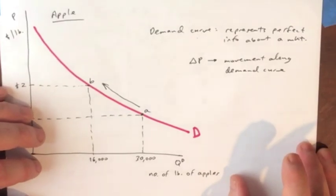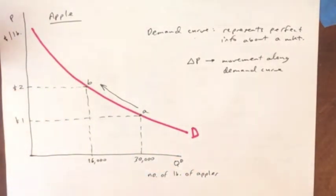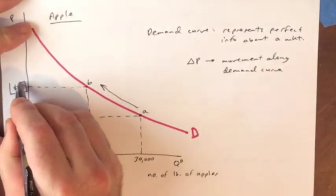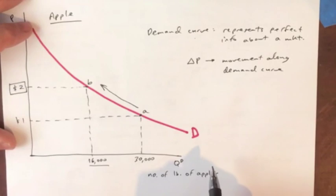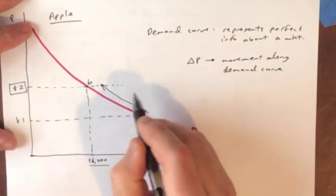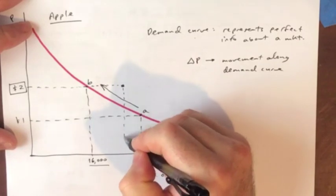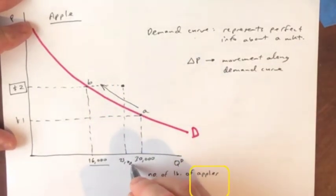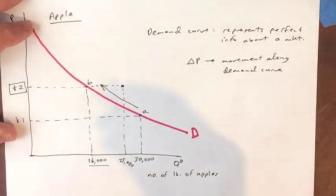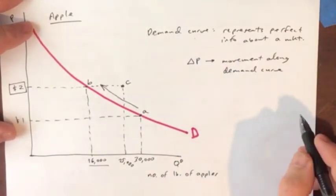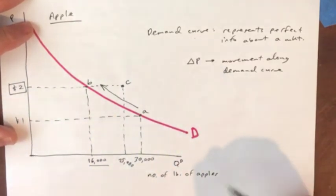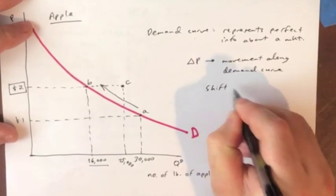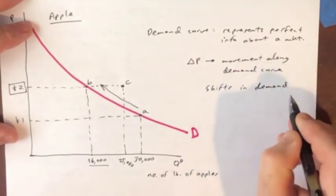Now we have another thing that can happen, which is that we can have something else change, not the price. Let's say that the price remains constant at two dollars. And we know that before, people were buying sixteen thousand. But let's say now something else is happening, that at a price of two dollars, we have a new outcome where people are now buying more than they were before. Let's say that they're buying now twenty-five thousand at that price. Something new has happened. For us to reach point C, it's not reached by a change in the price. Something else must have happened.